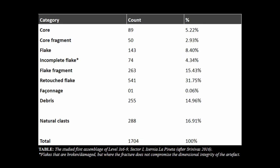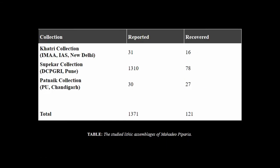With regards to distribution at Isernia, around 139 elements are core elements, around 1,100 are flake elements, and there are also naturoclasts and debris. One interesting find is the first evidence of façonnage on flint at the site. With regards to Madhya Pipriya, three collections were examined: the original Kathri collection, of which only half could be recovered; a more recent Patnaik collection also from the surface done in the late 2000s.